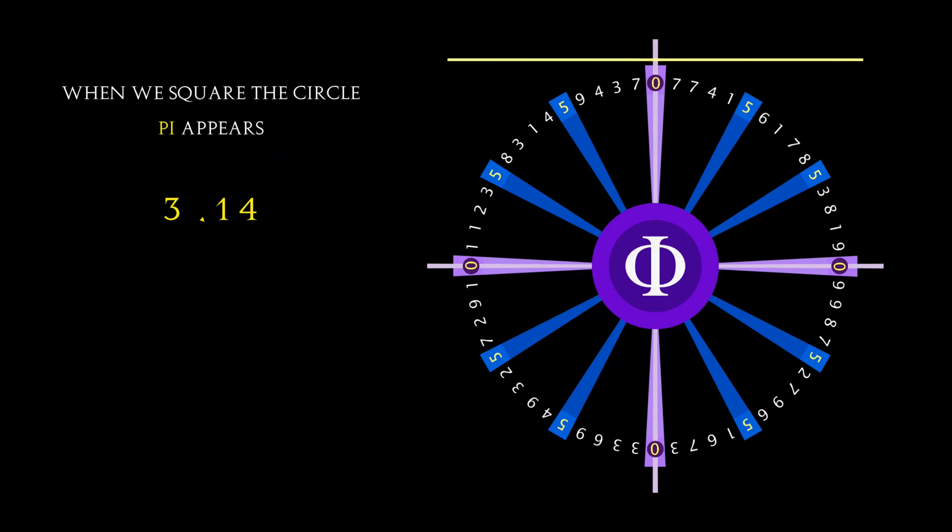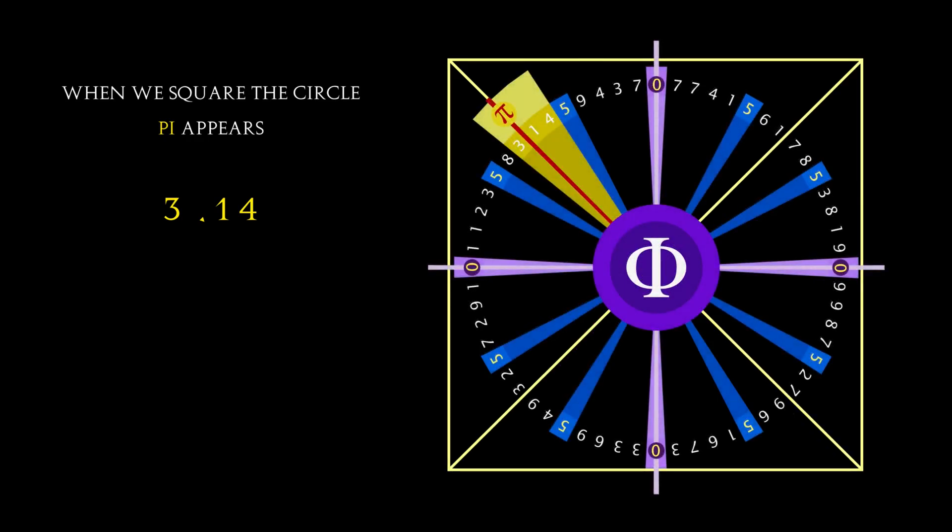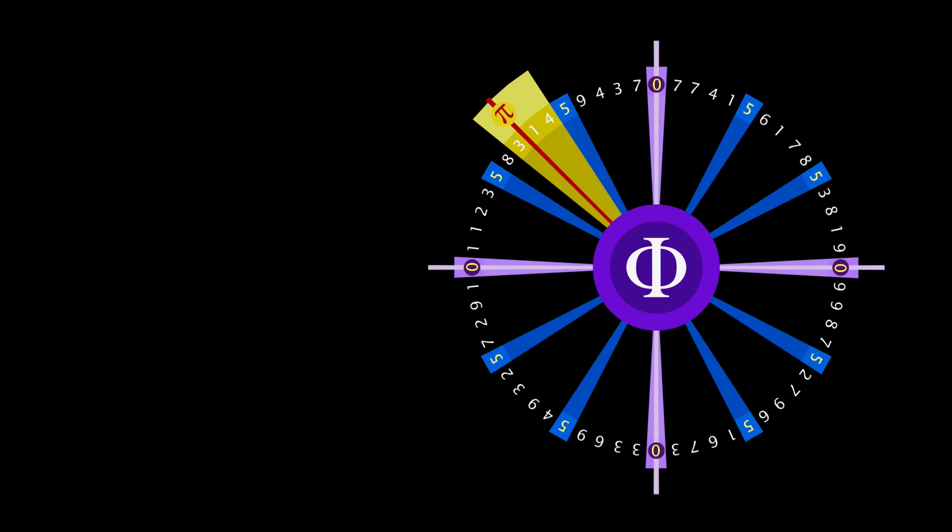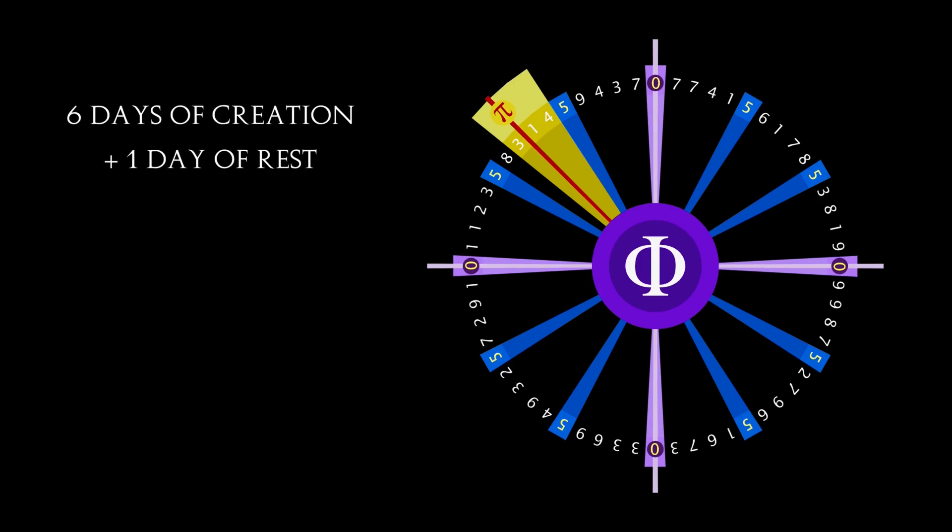When we square the circle, pi, 3.14, appears right on the decimal place. This mechanism demonstrates the six days of creation, plus one day of rest, or the seven stages, phases, or turns that the creator made when creating the universe as we see it now in the present.